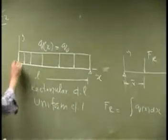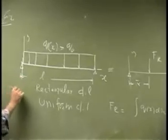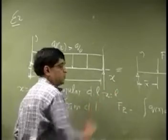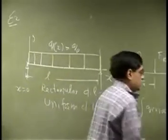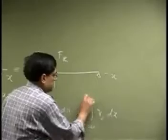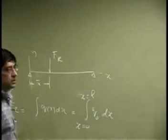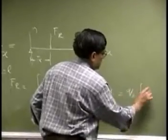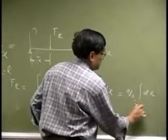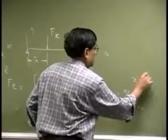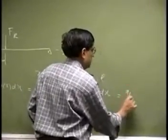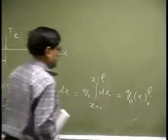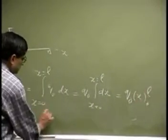So the load starts right from this point, that's x equals 0, then it ends at this point where x is L. This integration is going to go from 0 all the way up to L. Or if you do the integration, you get Q0 dx, x going from 0 to L, or Q0 x within limits 0 to L, or Q0 L.